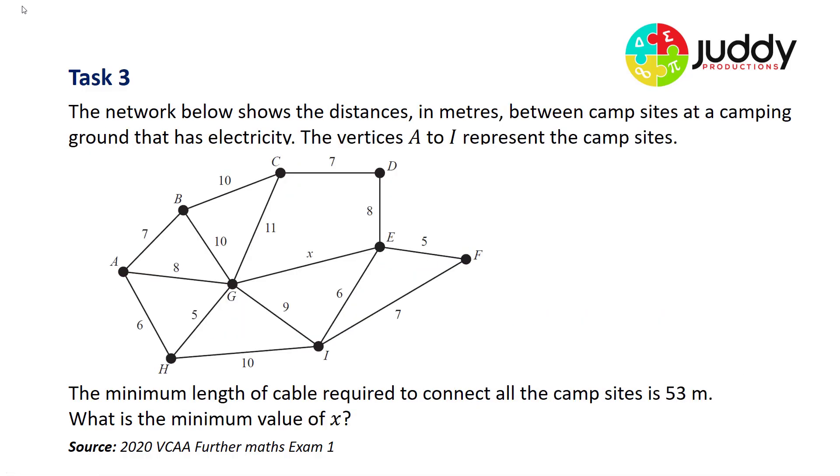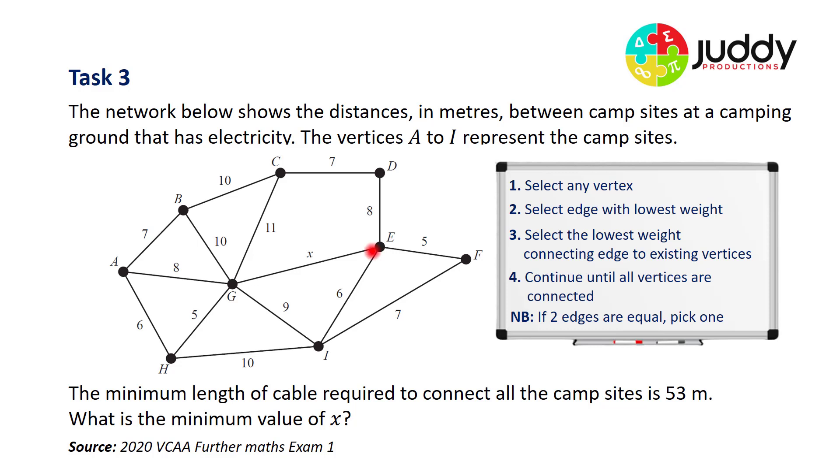Our third and final example. The network below shows the distances in meters between campsites at a camping ground that has electricity. The vertices A to I represent the campsites. The minimum length of cable required to connect all the campsites is 53 meters. What's the minimum value of x? So here is our edge weighted with the value of x that we're trying to determine. So rule number one, select any vertex. Because I know the edge with the weighting x has to be part of the minimum spanning tree, I'll start there.